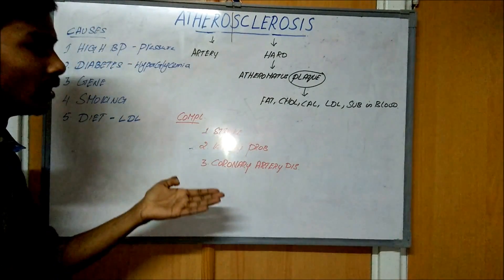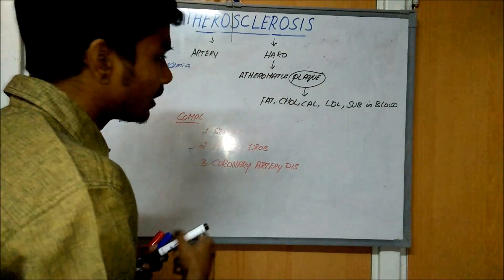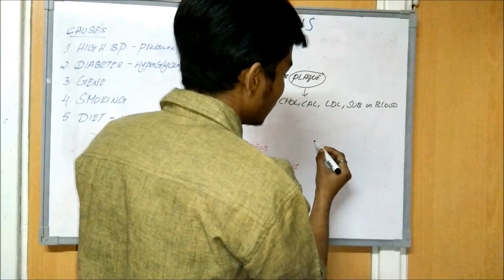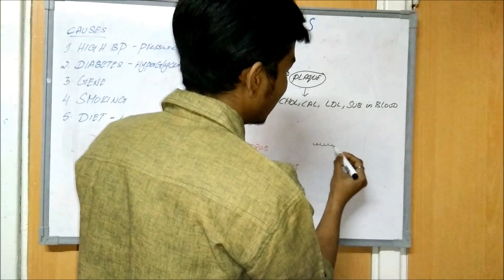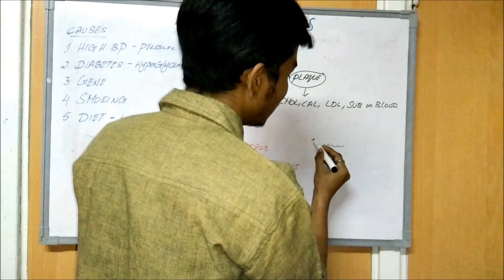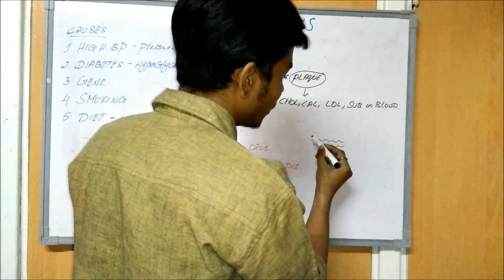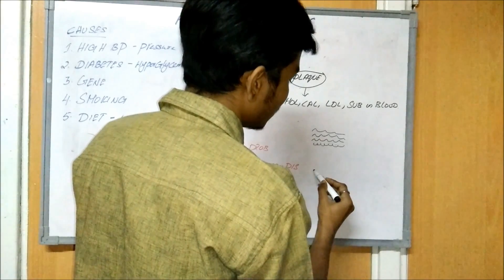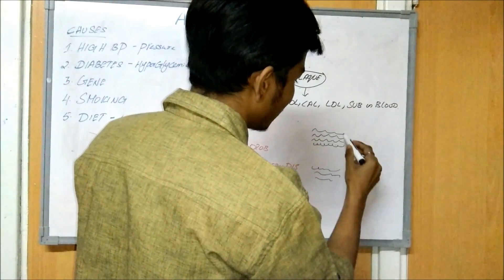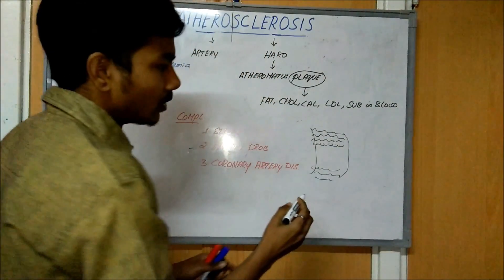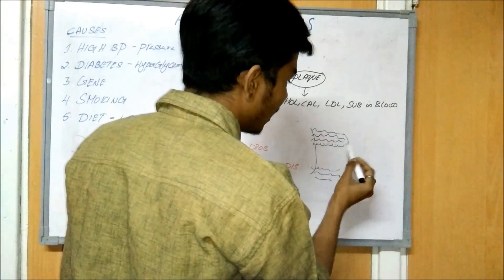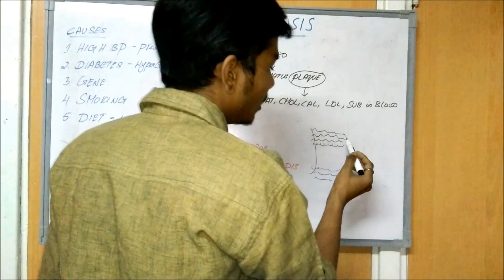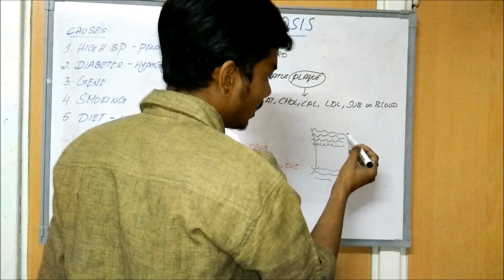We already discussed the layers present in arteries. There is an endothelial layer, then we have tunica intima, tunica media, and tunica adventitia. These are the layers of the artery wall, starting from the endothelial cells on the inside through to the tunica adventitia on the outside.